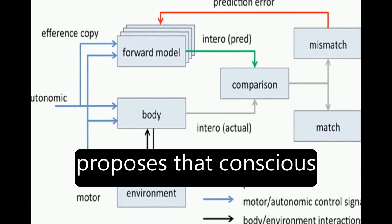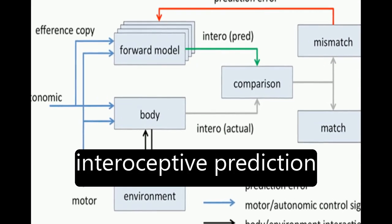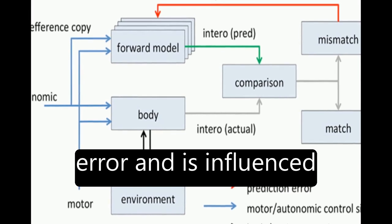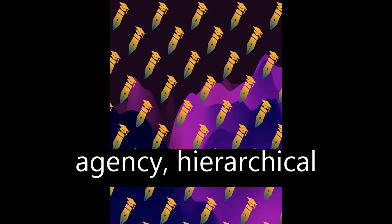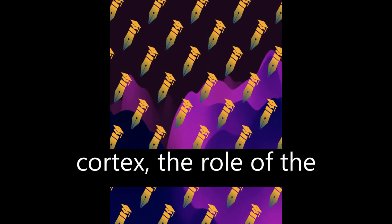The theoretical model proposes that conscious presence is based on interoceptive prediction error and is influenced by predictive models of agency, hierarchical predictive coding, and dopaminergic signaling in cortex.